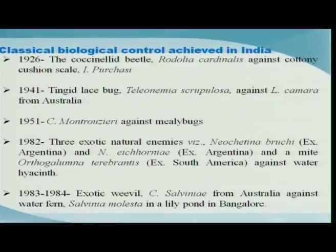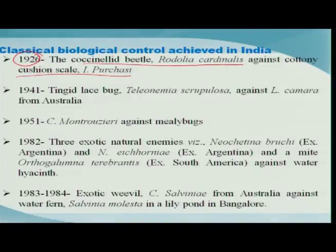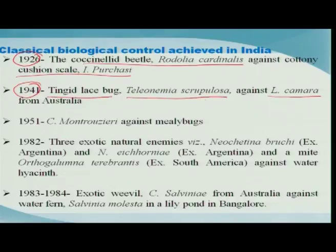In India also we have examples of classical biological control. During 1926 the same cottony cushion scale, Icerya purchasi, was quite serious, and the same beetle Rodolia cardinalis was introduced to control it. Then during 1941, the lantana camera plant became a serious weed in India, and the tinged lace bug Teleonemia scrupulosa was introduced and is keeping this weed in check.